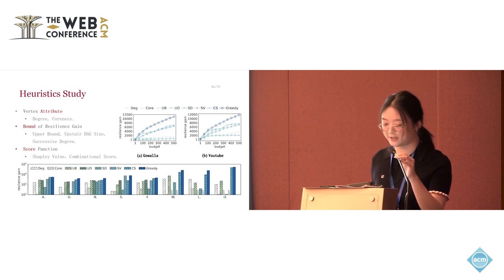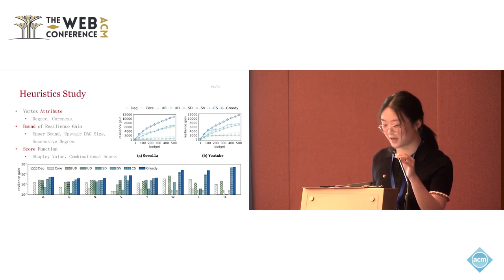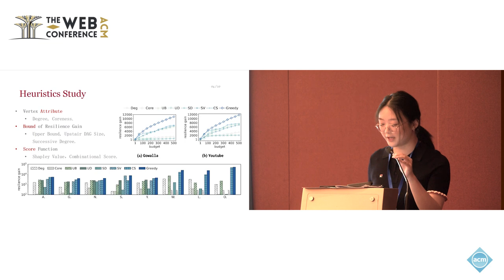We design also eight different heuristics. Due to the time constraints, I only give a brief overview of all the heuristics without delving into the specific details, and we encourage the audience to refer to our paper. Among the eight heuristics, other than the greedy approach, the other seven approaches can be categorized into three categories. First is the vertex attribute.